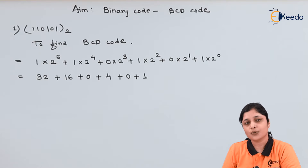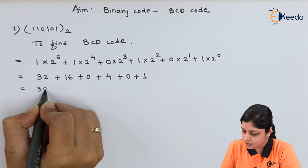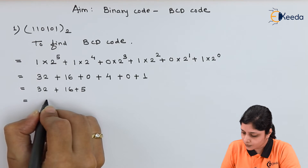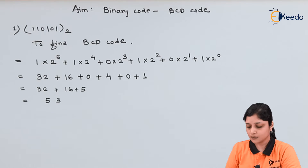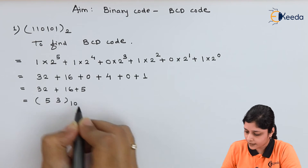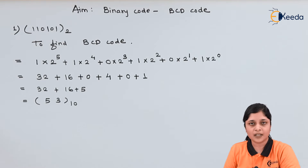Anything raised to the power 0 you will get as 1. Perform the addition. What you will get is 53 base 10. So you got the decimal equivalent of the binary number 110101.